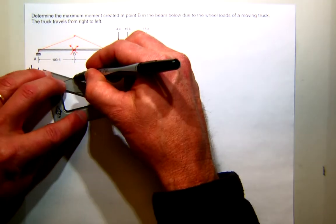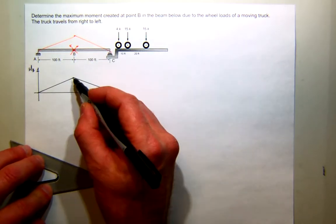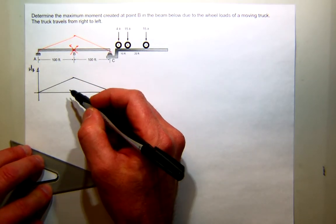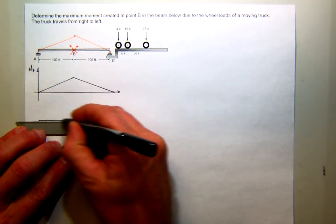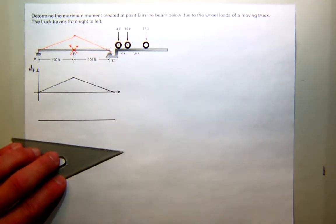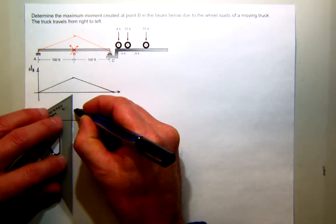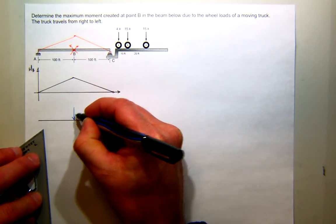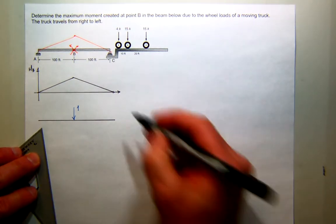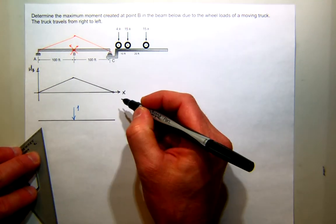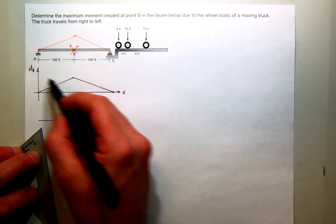We just need one value. How do I find that one value? Well, I'll go back and look at the structure, and I'll put my unit load right here. And why am I putting it here? Because remember, the x direction here is not the distance along the beam. It's the position of the unit load. The place that we're finding the moment is at B.